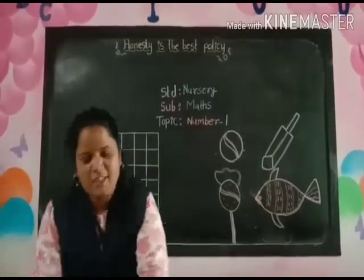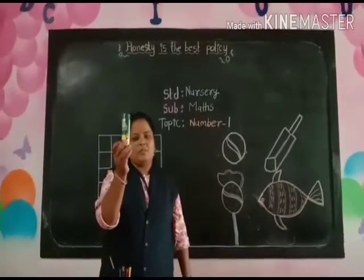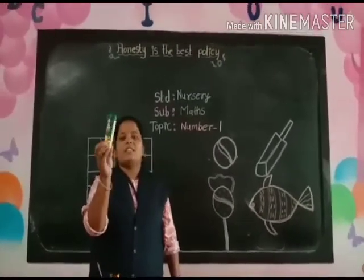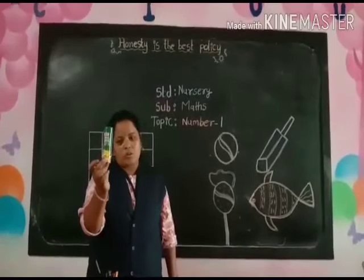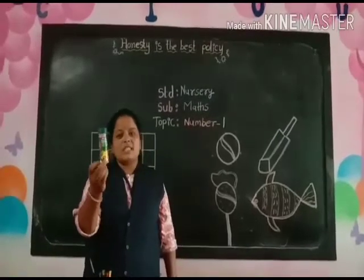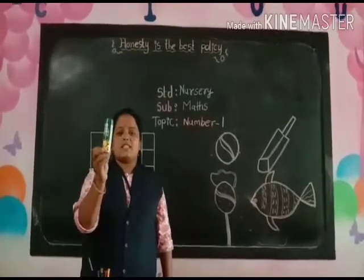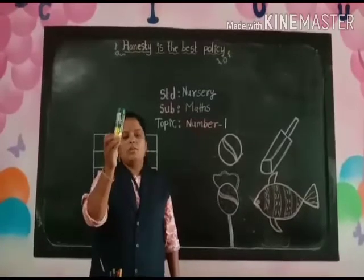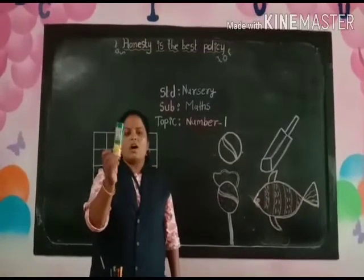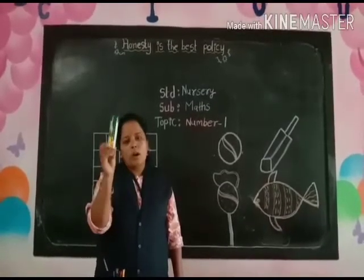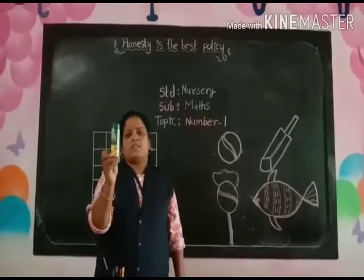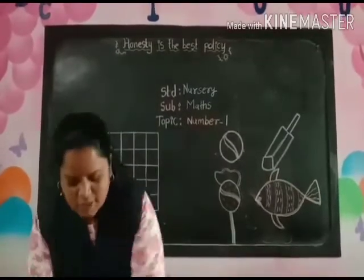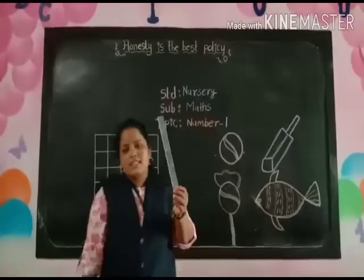Look at this picture. What is this? This is a crayon box. How many boxes here? One box. How many boxes here? One box.